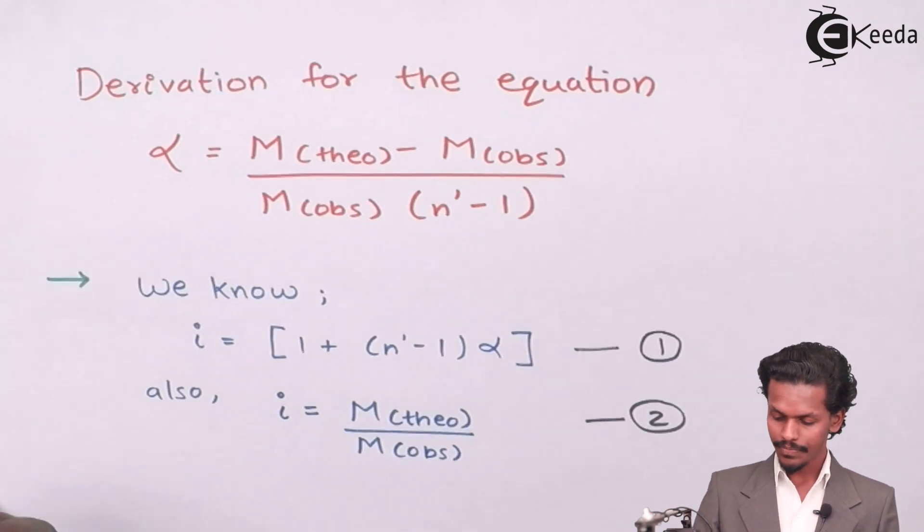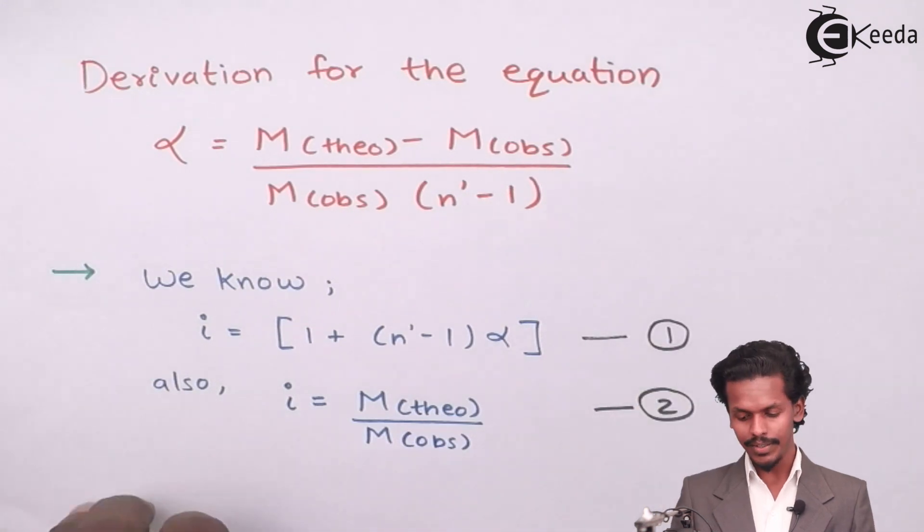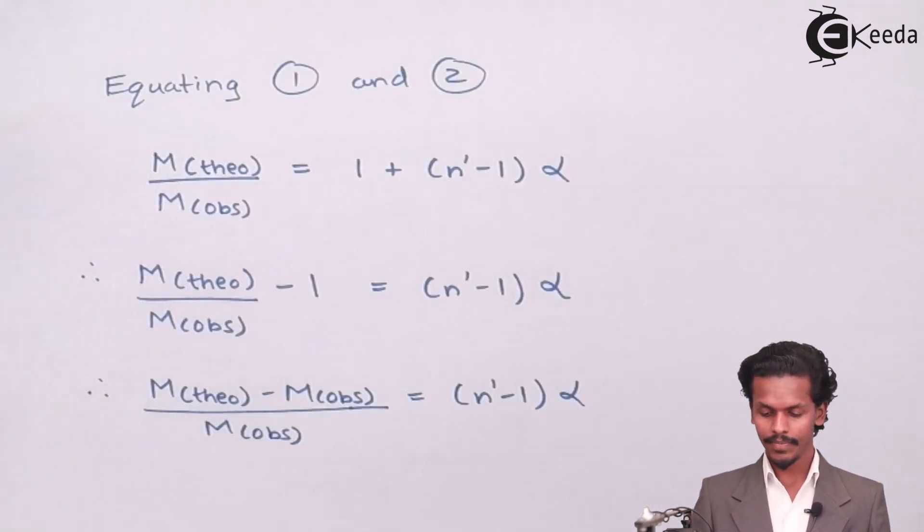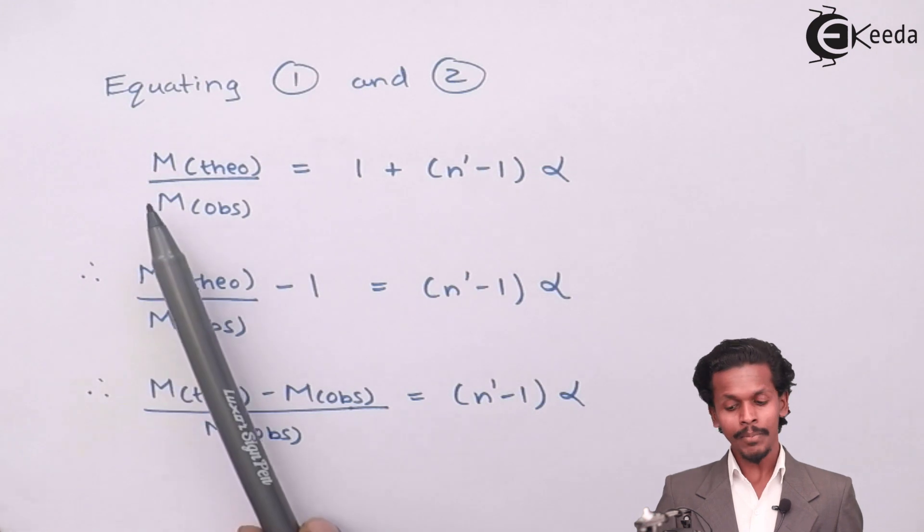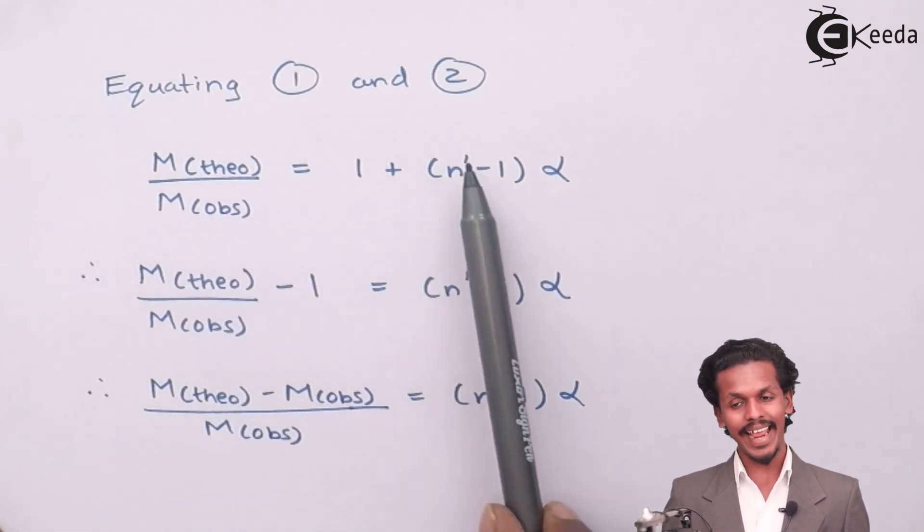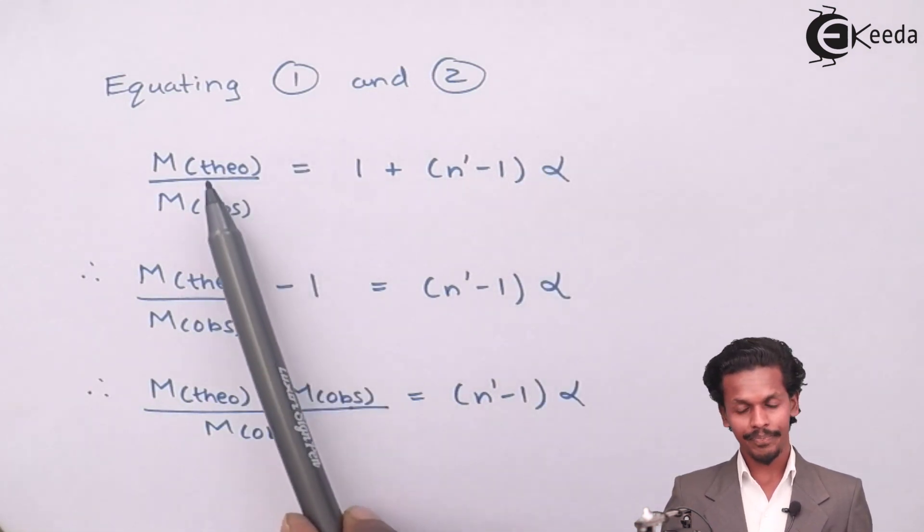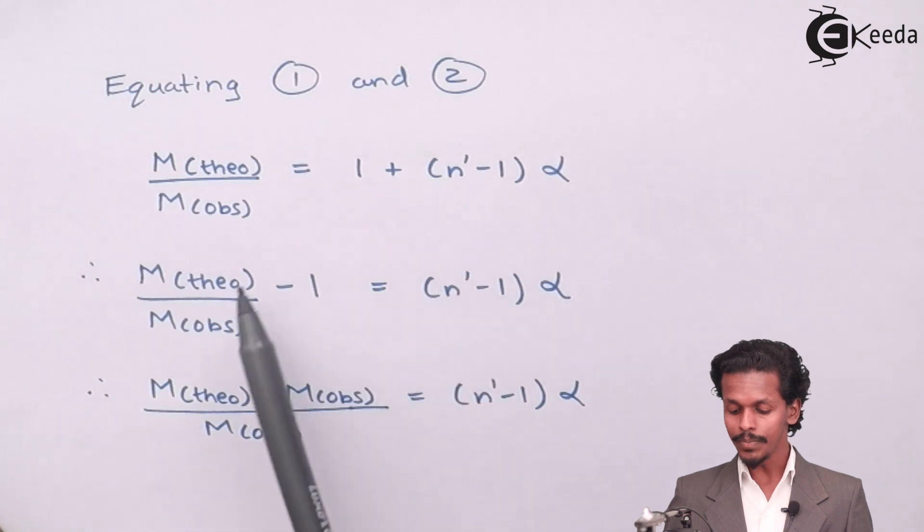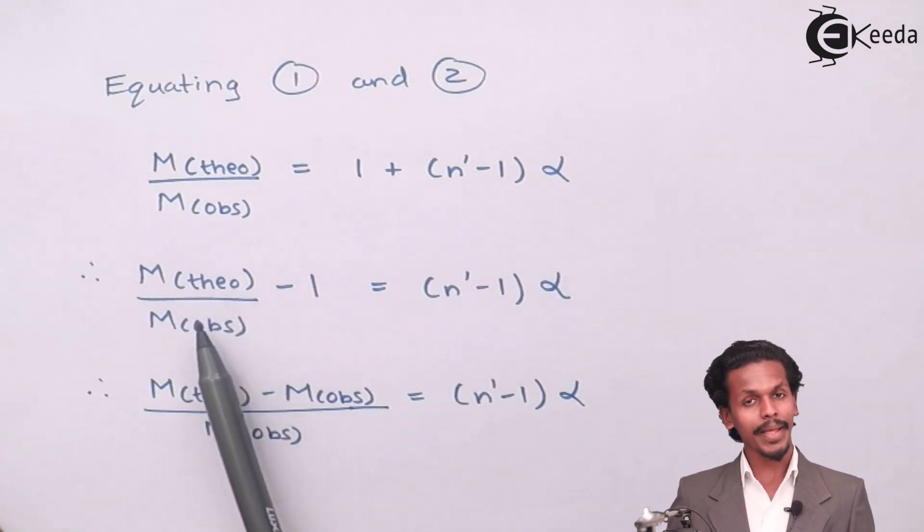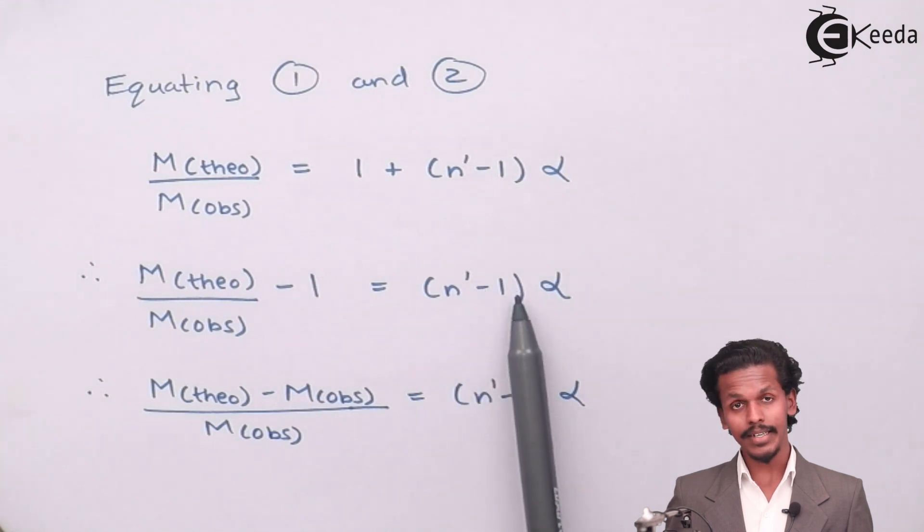So by equating these two equations, we will get M theoretical divided by M observed equals 1 plus n bar minus 1 alpha. So this would be converted into M theoretical divided by M observed minus 1 equals n bar minus 1 into alpha.